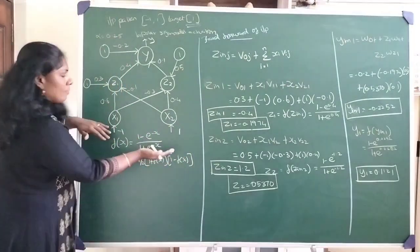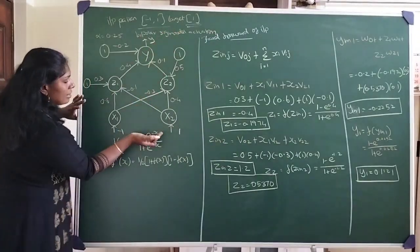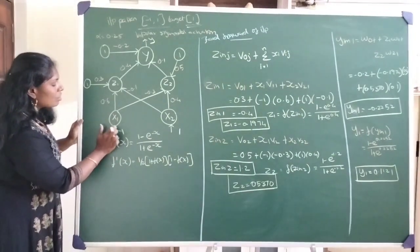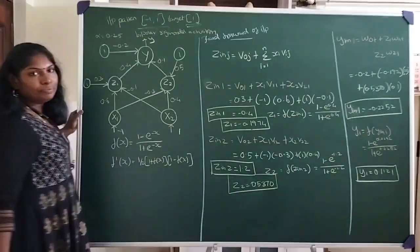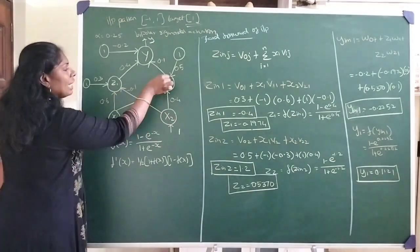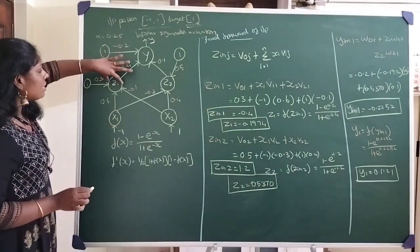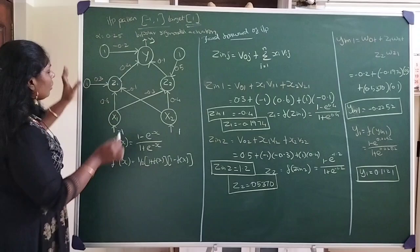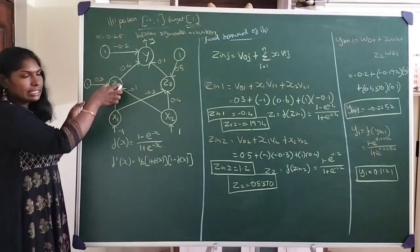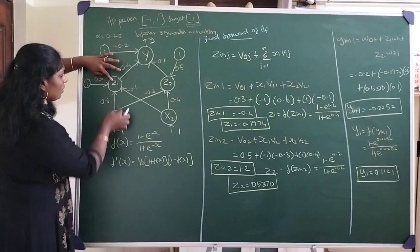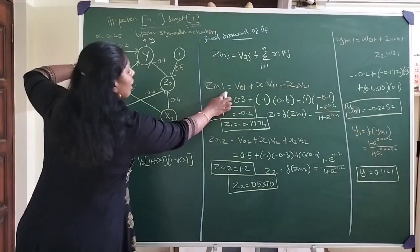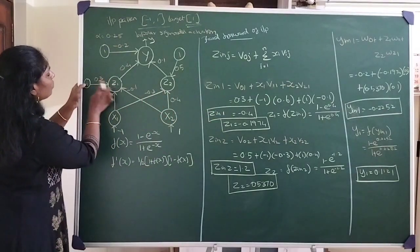The first step: the input pattern is taken and fed into the input neurons. x1 takes the value minus one and x2 takes the value one. We then process feed forward — passing values from the input layer to the hidden layer. Starting with z1, we take all the connections into it: it receives input from the bias, x1, and x2.